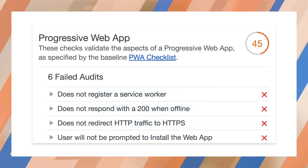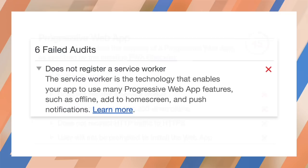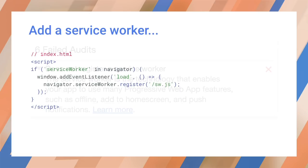So let's take a simple web page, run Lighthouse, and look at the PWA section. We have six failed audits. Let's expand 'does not register a service worker.' This gives us a quick explanation of service workers. We can also click on the link at the bottom for more technical details.